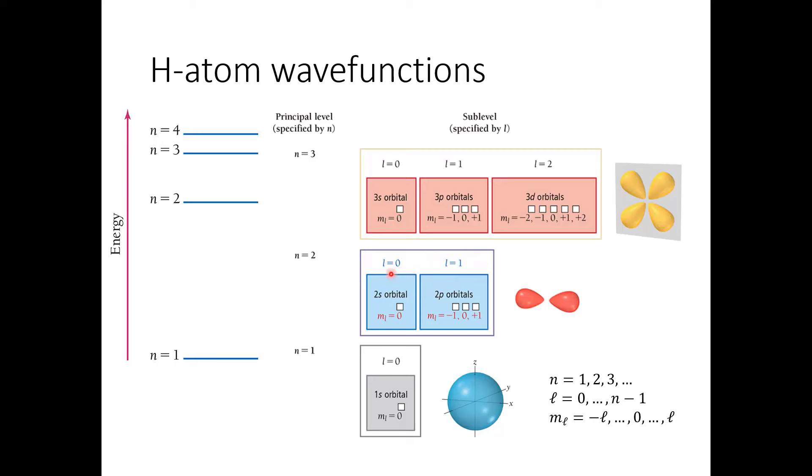In the n equals 2 levels, we can now have either l equal to 0 or l equal to 1. When l is equal to 0, we again have a spherical orbital. There's only one way to have a sphere. And we also have l equals 1, where we have this peanut-shaped orbital. And here, there's three different ways to orient it. We can orient it around the x, y, or z axis. And so there's three possible values of m sub l, which is m sub l is negative 1, 0, or 1.